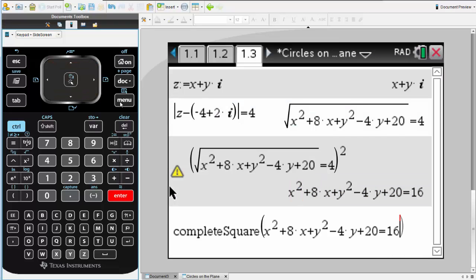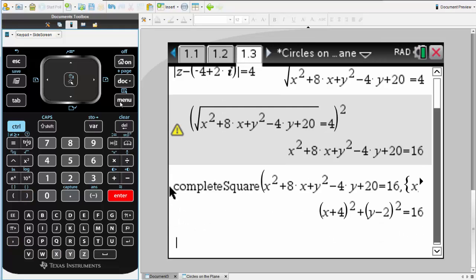For this expression, using both x and y. And there we have our equation. x plus 4 all squared plus y minus 2 all squared equals 16. A circle centered at minus 4, 2.